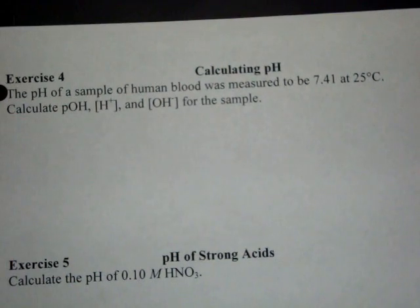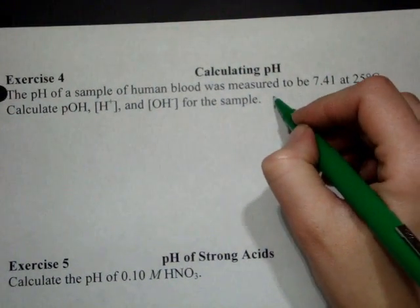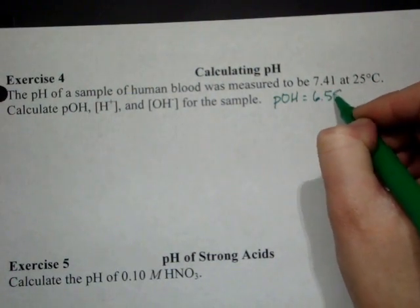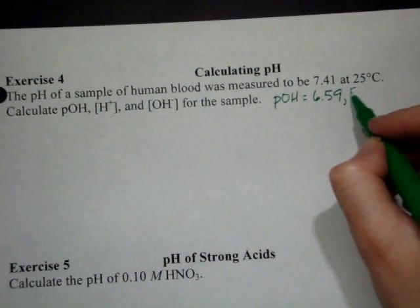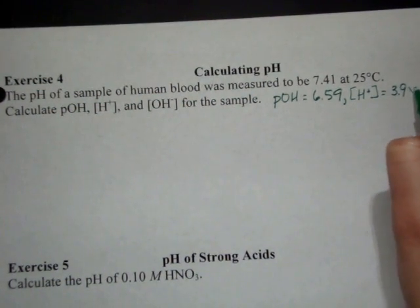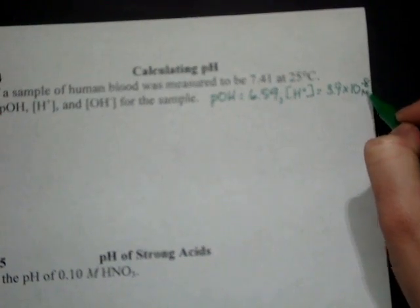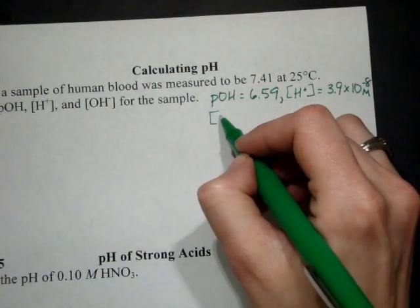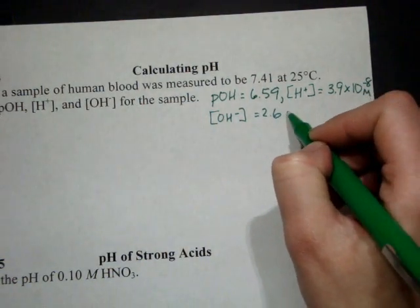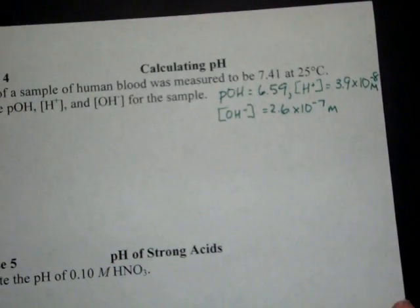Okay, on to exercise number 4. The answer for this one has 3 parts. The pOH is 6.59. The hydrogen is 3.9 times 10 to the negative 8th. And the hydroxide is 2.6 times 10 to the negative 7. Try it on your own. If you don't figure it out, come back and watch.